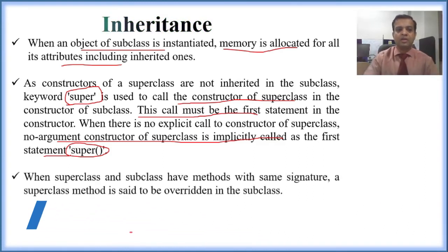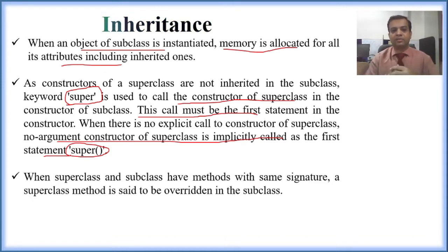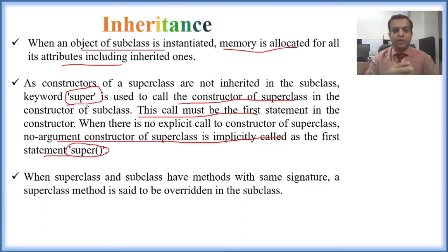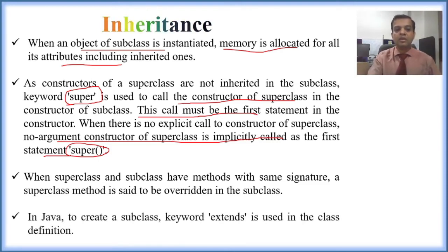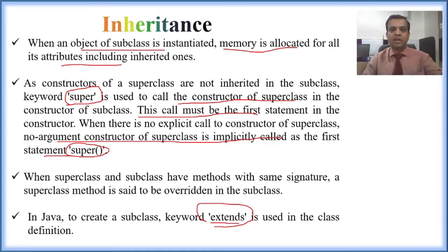When super class and subclass have methods with the same signature, the super class method is said to be overridden in the subclass — subclass has priority depending on the object. To create a subclass, we use the extends keyword.